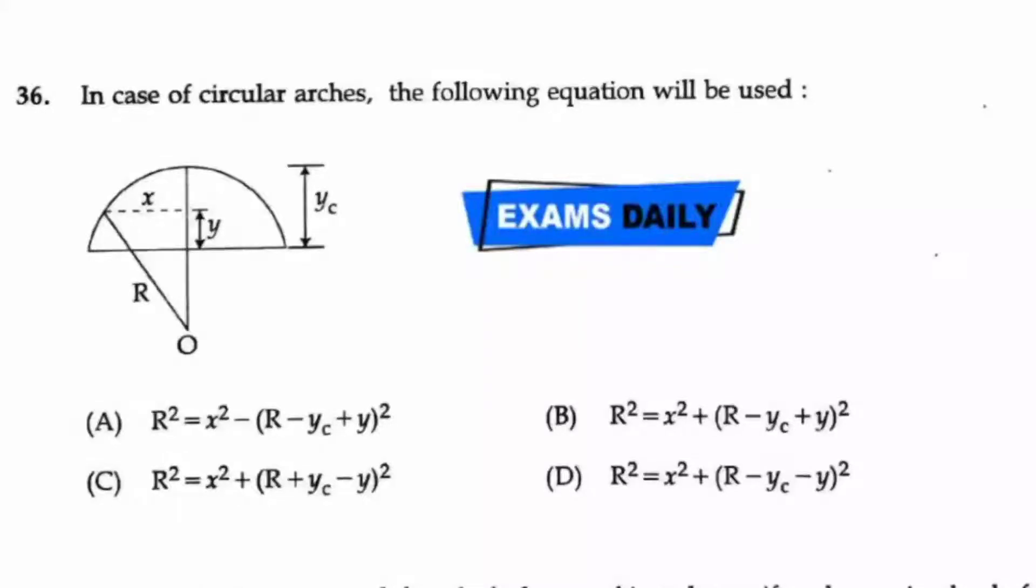They have used the Pythagoras theorem here. R is the hypotenuse of that triangle, one side is x, and the other side is (R - yc + y). That will give you the other side of the triangle.